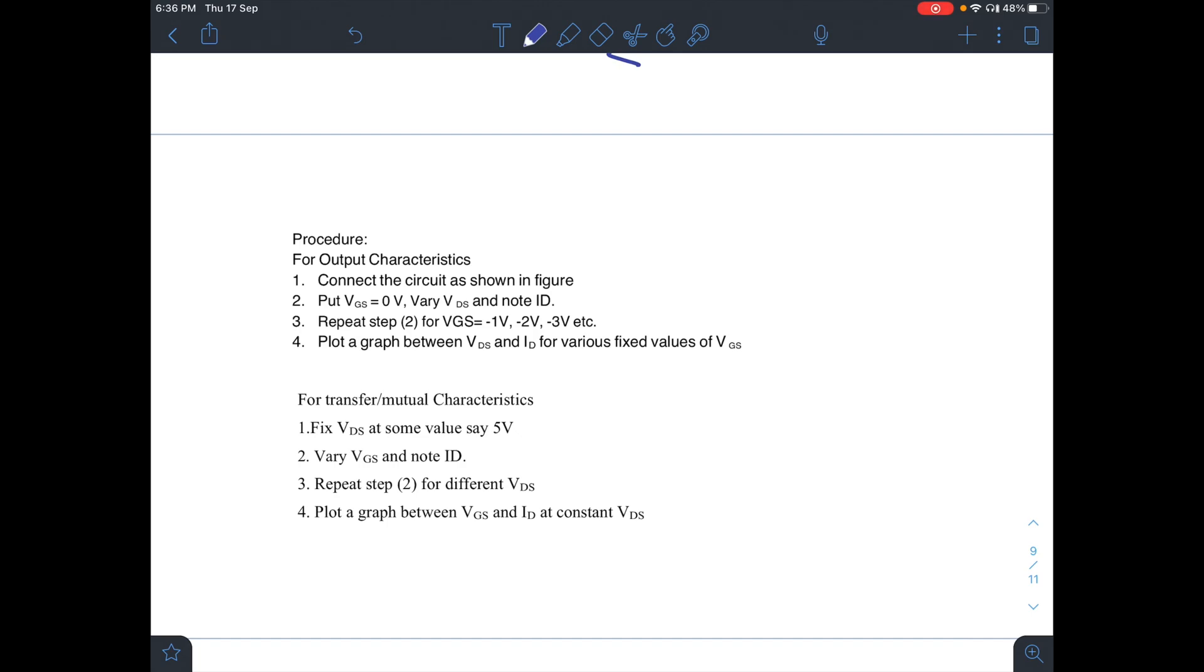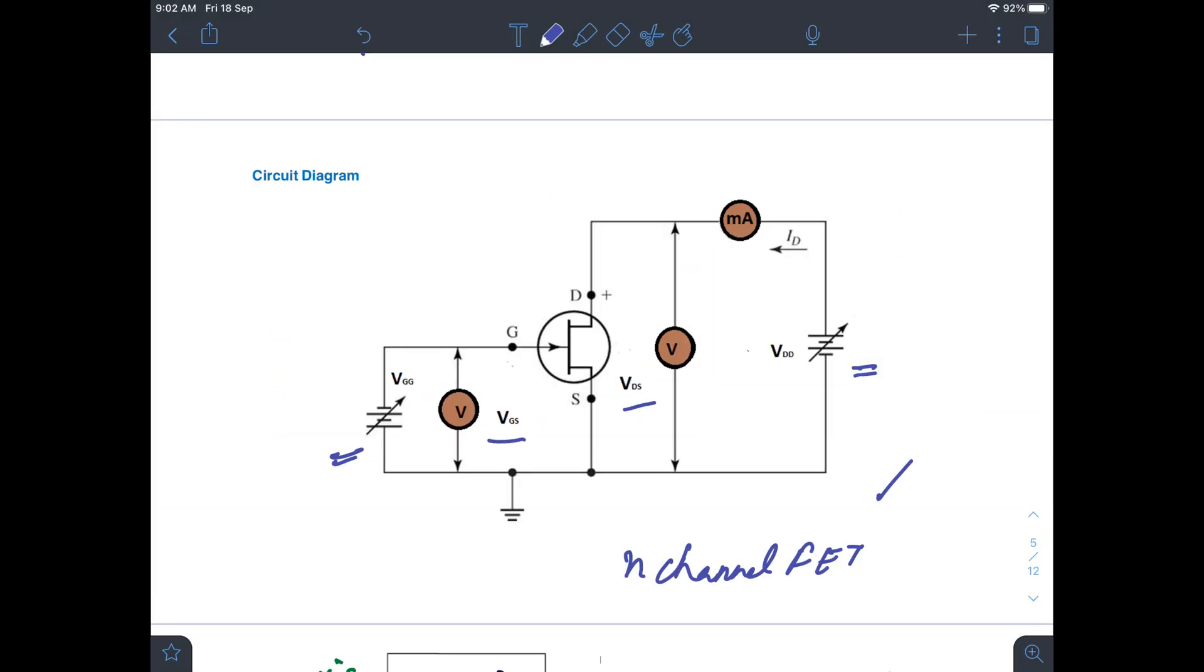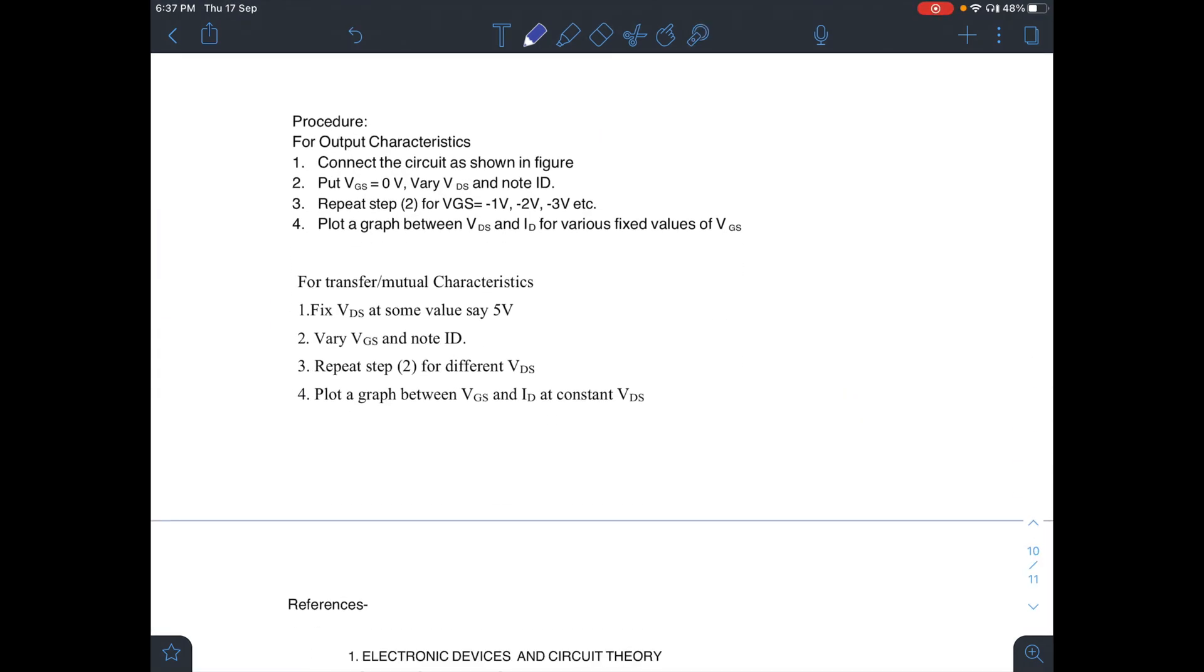The procedure, as I explained, for output characteristics, you have to connect the circuit as shown in this figure. You will put VGS equal to 0 and vary VDS, note ID. This step is repeated for different values of VGS, and you have to plot a graph between VDS and ID.